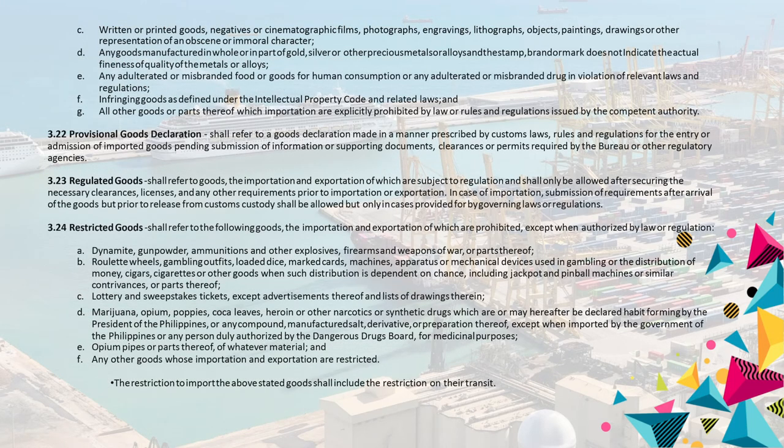c. Written or printed goods, negatives or cinematographic films, photographs, engravings, lithographs, objects, paintings, drawings, or other representation of an obscene or immoral character. d. Any goods manufactured in whole or in part of gold, silver or other precious metals or alloys and the stamp, brand, or mark does not indicate the actual fineness of quality of the metals or alloys. e. Any adulterated or misbranded food or goods for human consumption or any adulterated or misbranded drug in violation of relevant laws and regulations. f. Infringing goods as defined under the intellectual property code and related laws. g. All other goods or parts thereof which importation are explicitly prohibited by law or rules and regulations issued by the competent authority.